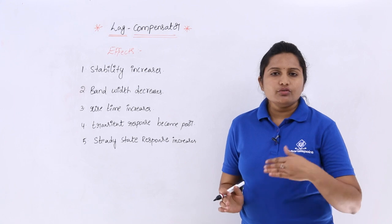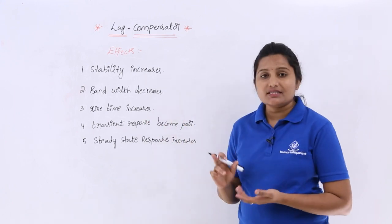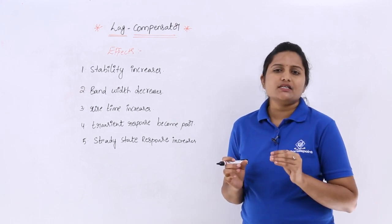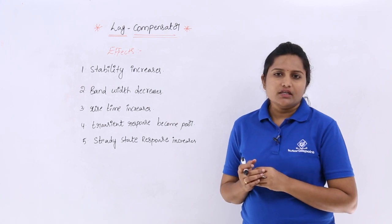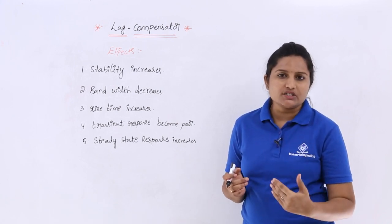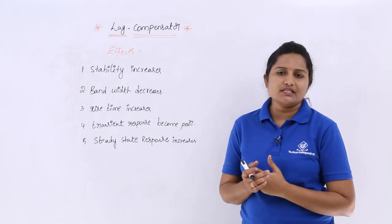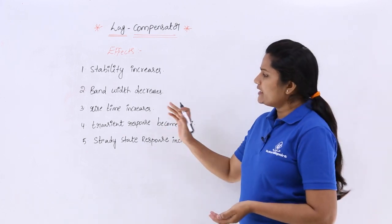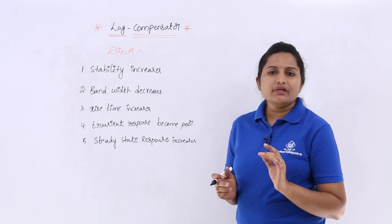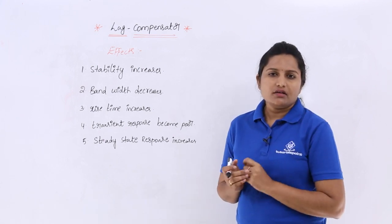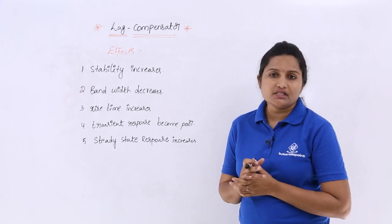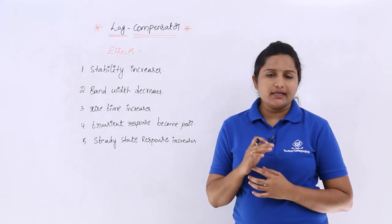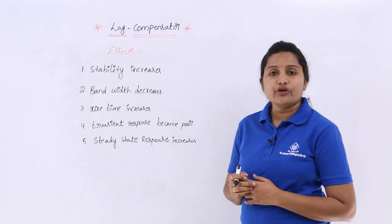Coming to rise time — for a lag compensator rise time will increase, meaning the time for the response to go from 0% to 100% of its final value (for an under-damped system) becomes longer. It will take much more time to reach maximum response. But for a lead compensator, rise time decreases.